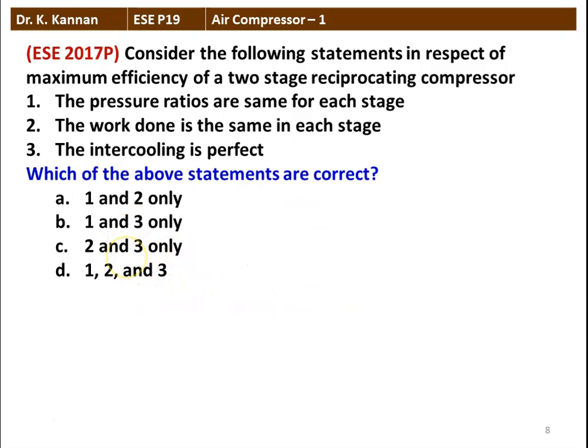The next question: Consider the following statements for maximum efficiency of a two-stage reciprocating compressor. The pressure ratios are the same for each cylinder. The work done is the same for each stage. The intercooling is perfect. All three statements are correct — 1, 2, and 3. The pressure ratio is the same for each stage, so work done is also the same. Intercooling should be perfect for maximum efficiency of the two-stage reciprocating compressor.